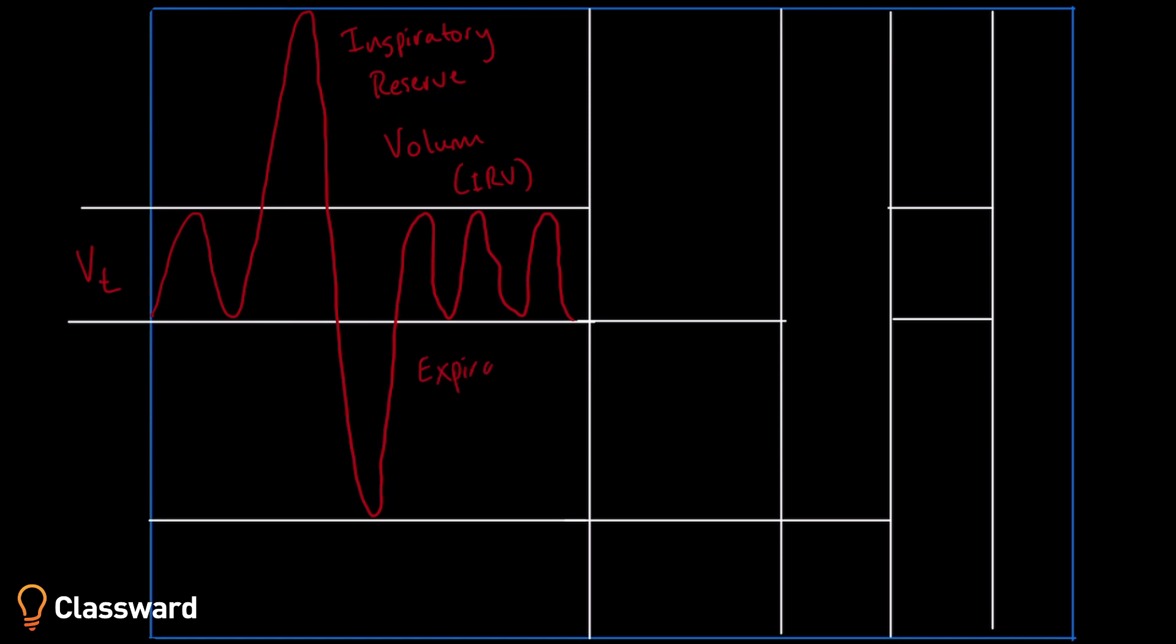After that, we're going to talk about expiratory reserve volume. This is the amount of air that's exhaled forcibly after exhalation included in a normal tidal volume. The normal value for an adult is somewhere around 800 or 900 milliliters of air.